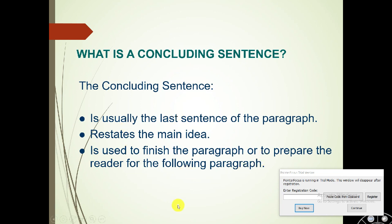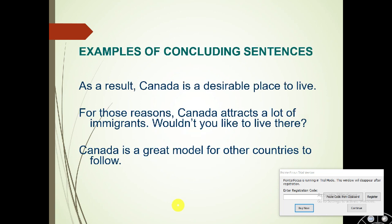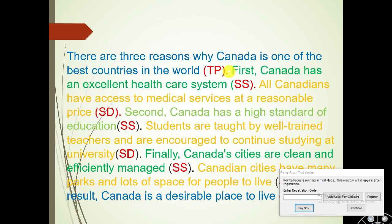Examples of concluding sentences: 'As a result, Canada is a desirable place to live.' 'For those reasons, Canada attracts a lot of immigrants.' 'Wouldn't you like to live there?' or 'Canada is a great model for other countries to follow.' These are three different examples of a concluding sentence for a paragraph about Canada.